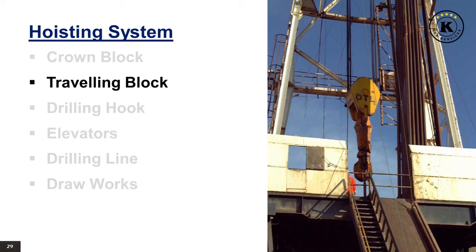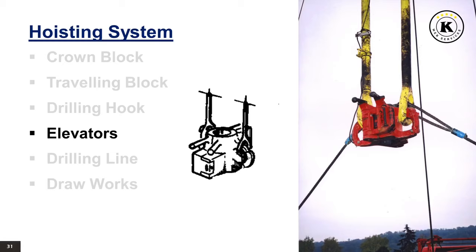The hook is suspended directly from the traveling block. It is composed of a main hook that carries the swivel bale and two smaller offset hooks carrying the elevator arm bales. The hook can rotate on the axis of the traveling block, limited by a lock device, and is also sprung. Two elevators are hung from the hook on the elevator bales and are used for latching around the drill pipe to lift it. Elevators come in many designs and sizes for use with different pipe, drill collar, and casing sizes, and are not used during drilling but are necessary for lifting pipe during a trip.